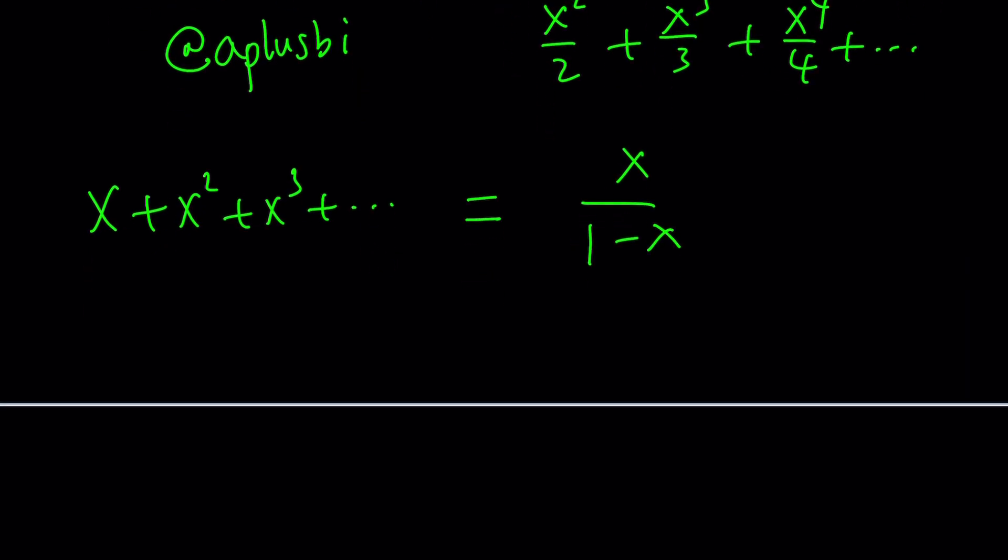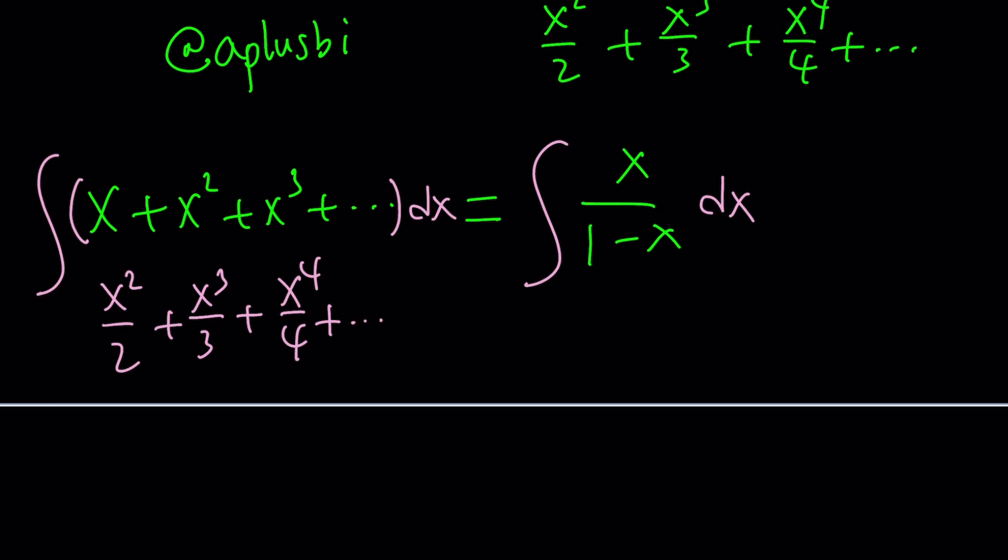And then where do we go from here? Here's what we do. Here's the hocus pocus magical or maybe mathematical touch. We integrate both sides. Awesome. This is where the magic happens because when you integrate x, you get x squared over 2 and then x cubed over 3, x to the 4th over 4, and so on and so forth. Wow. That's just awesome, isn't it?